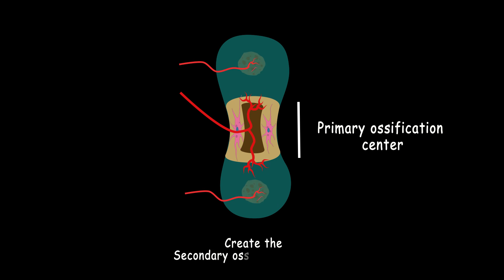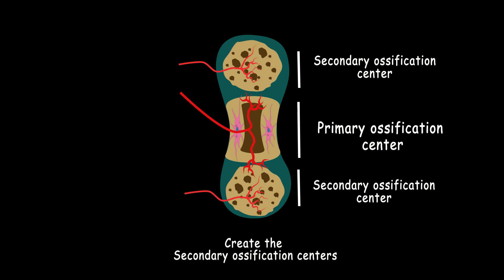Secondary ossification centers are created at both ends of long bones. However, some chondrocytes are stored in the area between the primary and secondary ossification centers and make the growth plates. After birth, these sites are responsible for the growth of long bones by endochondral ossification.